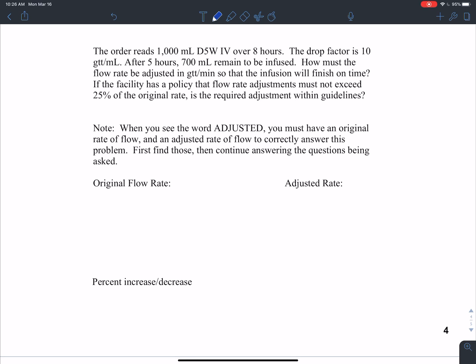So when we see that word adjusted, we have to find an original rate of flow and an adjusted rate of flow so that we can answer this question. If I look for what's going on originally, the order reads 1,000 milliliters over 8 hours. So I know that we have an original flow rate of 1,000 milliliters over 8 hours.